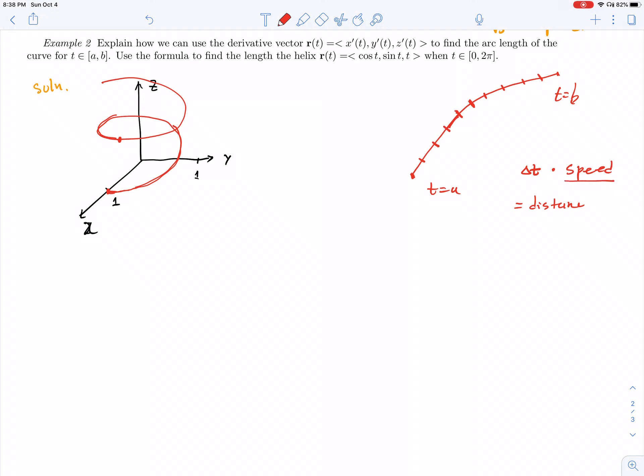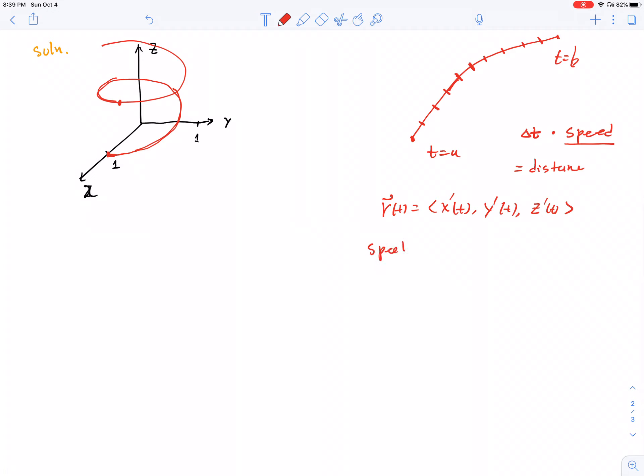We need to look at the velocity or the speed. Delta T times speed is equal to the distance. If we add up all the distance using integration, we'll have the arc length. The velocity vector takes three derivatives, which are the velocity's components in three different directions. Speed is the magnitude of the vector: the square root of x'(t) squared plus y'(t) squared plus z'(t) squared.